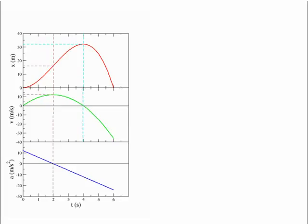These graphs are known as motion curves. The top graph represents position versus time. The middle graph, the green graph, represents velocity versus time, and the bottom one is acceleration versus time.